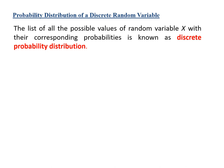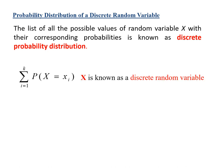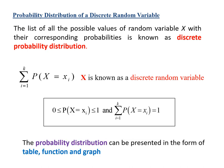The probability distribution of a discrete random variable: the list of all possible values of random variable x with their corresponding probabilities is known as the discrete probability distribution. The probability is always greater than or equal to 0 and less than or equal to 1, and the summation of all probabilities is always equal to 1. The probability distribution can be presented in the form of a table, function, or graph.